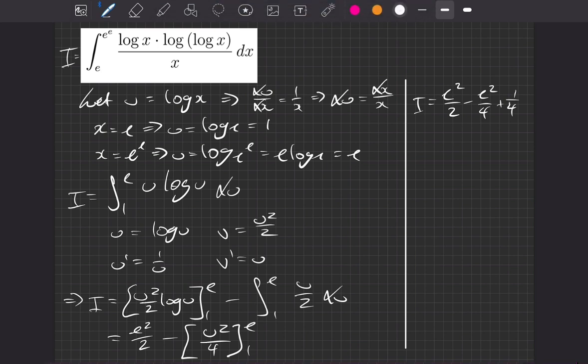And now the eagle-eyed amongst you will have spotted that this e squared on 2 and the e squared on 4, if you do a subtraction there, what we're left with is an e squared on 4. So we have a quarter of an e squared plus a quarter. So altogether then, e squared plus 1 divided by 4.